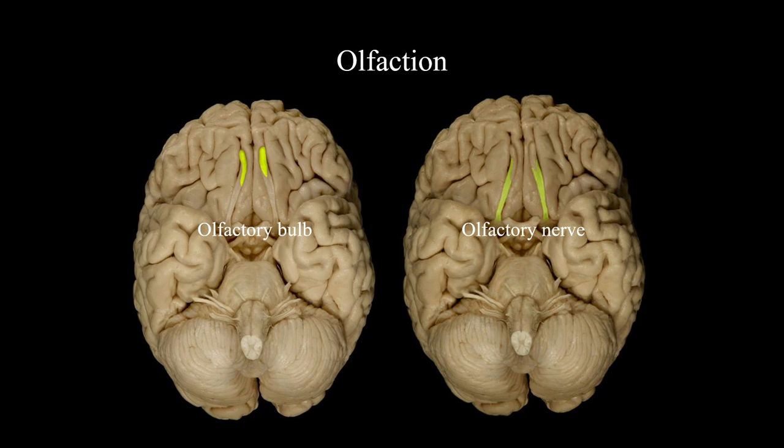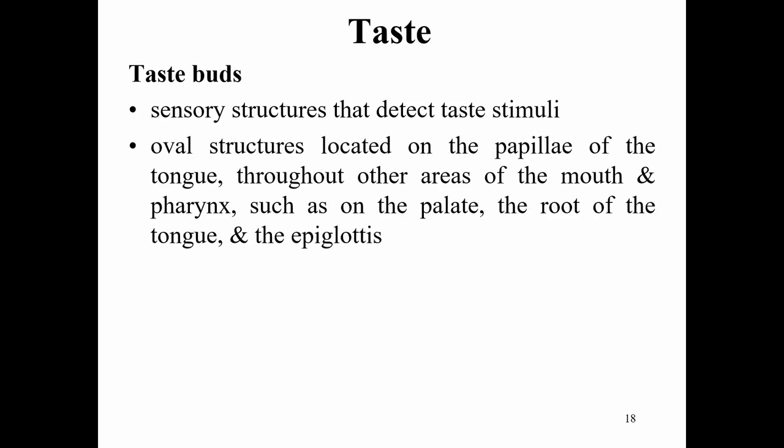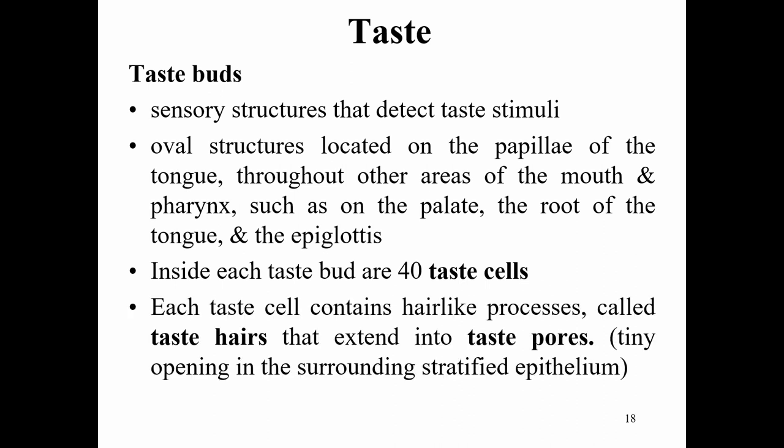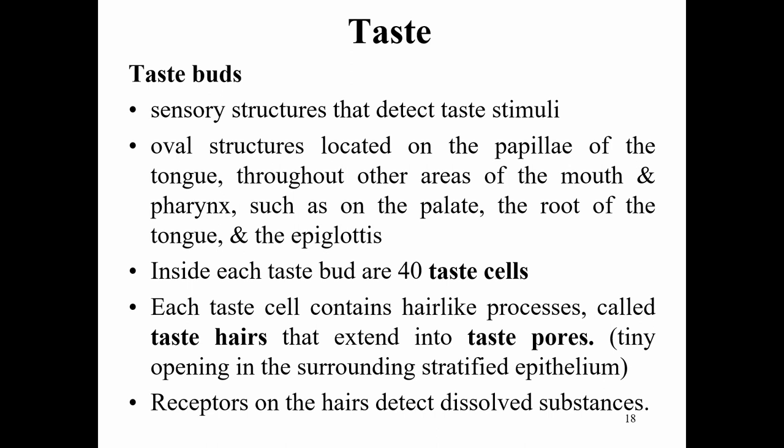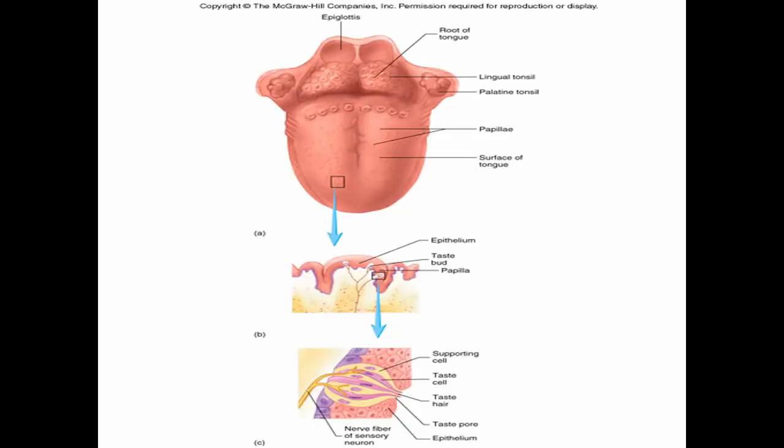Next we have taste. The most important structure is the taste bud — sensory structures that detect taste stimuli. These are oval structures located on the papillae of the tongue, throughout other areas of the mouth, the pharynx, the palate, and the epiglottis. Inside each taste bud are at least 40 taste cells. Each taste cell contains hair-like processes called taste hairs that extend into taste pores, tiny openings in surrounding stratified epithelium. Receptors on the hairs detect dissolved substances.